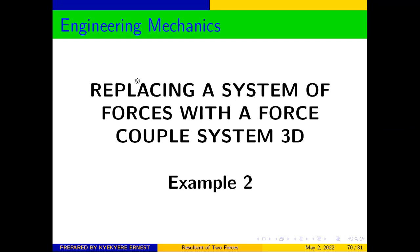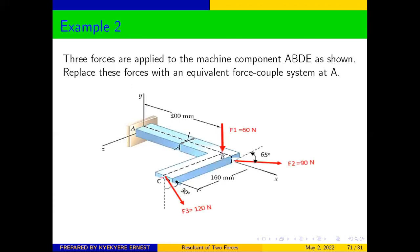Today we are looking at replacing a system of forces with a force-couple system for 3D bodies. Example 2. Let's look at our question and how to solve it. Three forces are applied to the machine component ABD as shown. Replace these forces with an equivalent force-couple system at A.